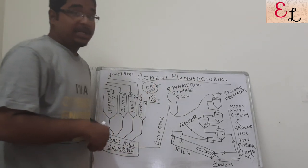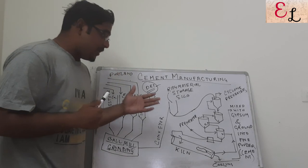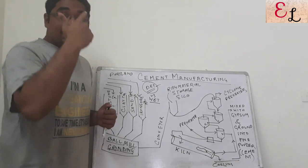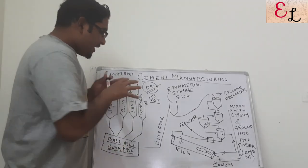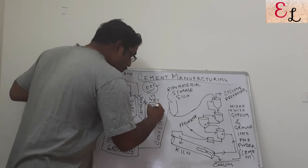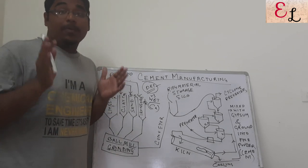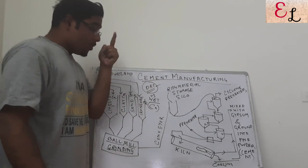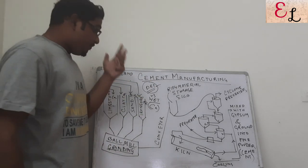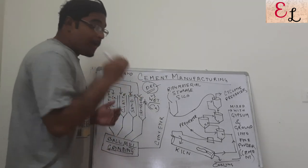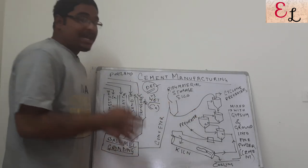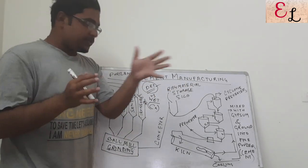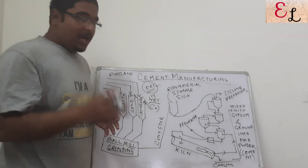Now we come to the most important network: the preheater network. To form cement, all four materials must combine at high temperature and react to form calcium silicates, calcium aluminates, and calcium aluminium ferrites. Calcium is the most important material — limestone constitutes about 80 to 90% of the feed. In the reactor, calcium reacts with silicates, aluminium, and ferrite ions to form these three compounds, which are the basic constituents of cement. Some gypsum is also mixed at the end, which we will discuss shortly.